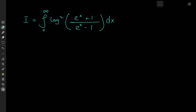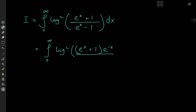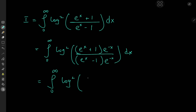The argument is (e^x + 1)/(e^x - 1). We modify that by expanding using e^(-x): multiplying numerator and denominator by e^(-x), we get the integral from 0 to infinity of log squared of (1 + e^(-x))/(1 - e^(-x)) dx.